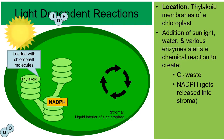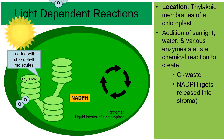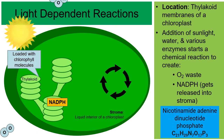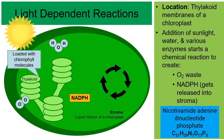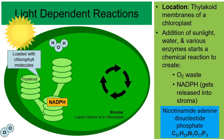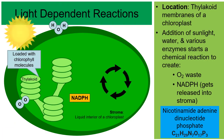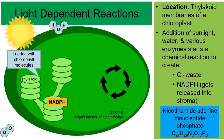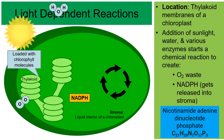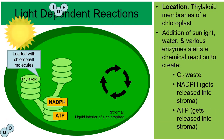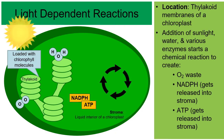A molecule abbreviated NADPH is created and released into the stroma. NADPH — nicotinamide adenine dinucleotide phosphate — is a hydrogen carrier, carrying many hydrogens that will be used in the second reaction of photosynthesis. Additionally, molecules of ATP are produced. So there are really three things created by the light-dependent reactions: oxygen waste, NADPH, and ATP.